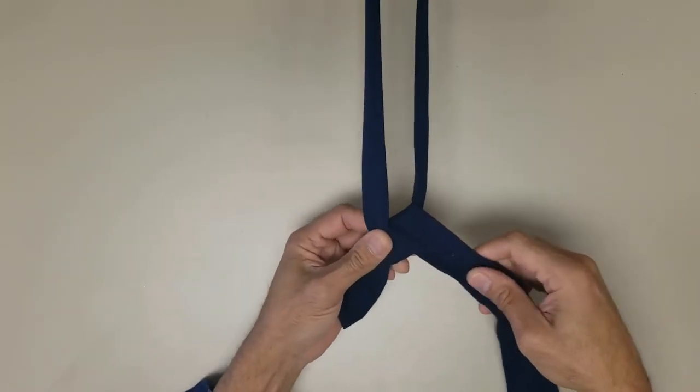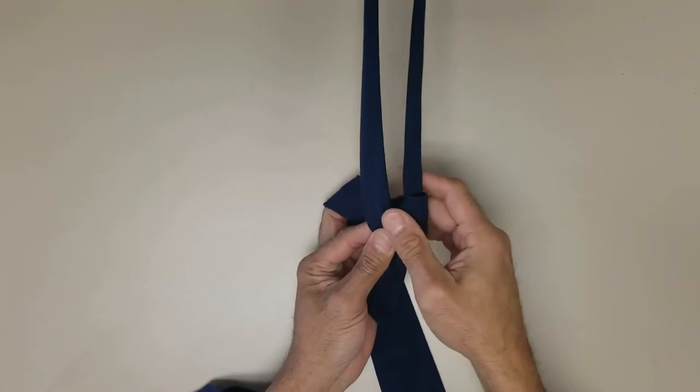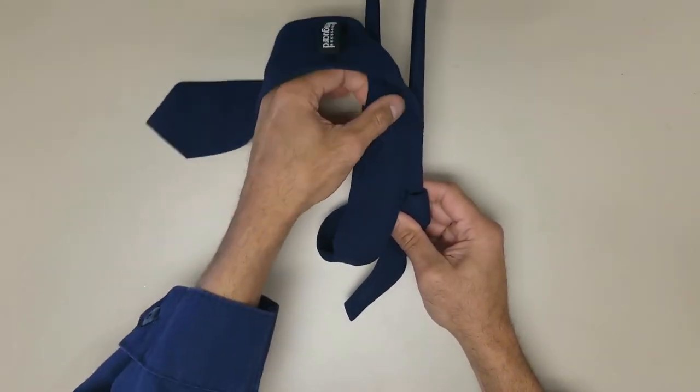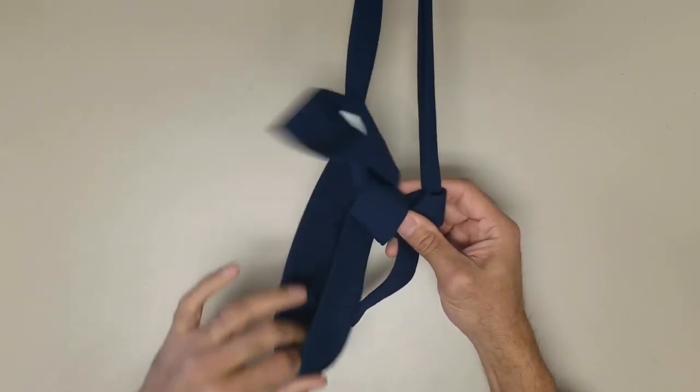Around the back of the small end to the right, up to the center towards the neck loop, through the neck loop, and down to the right.